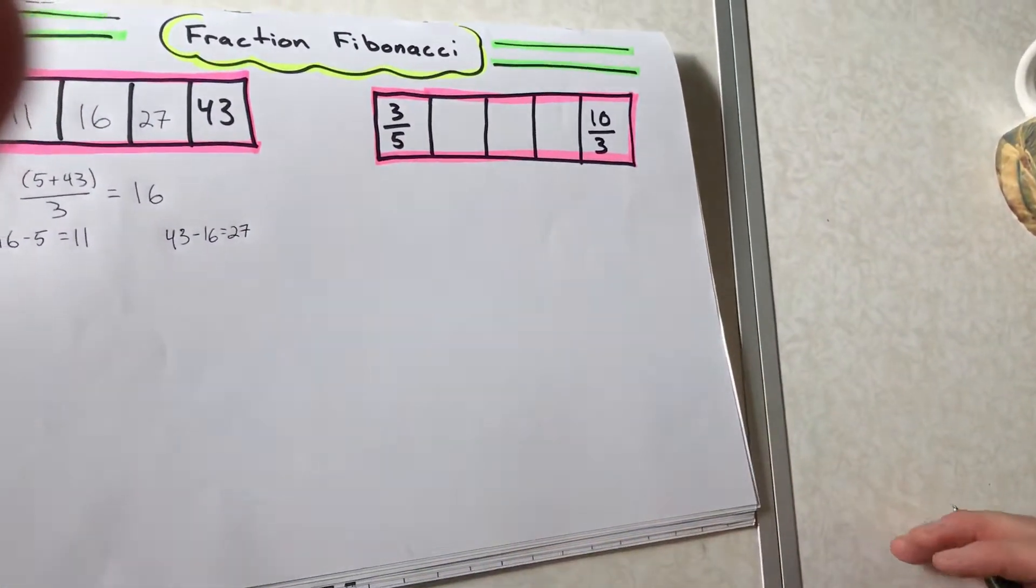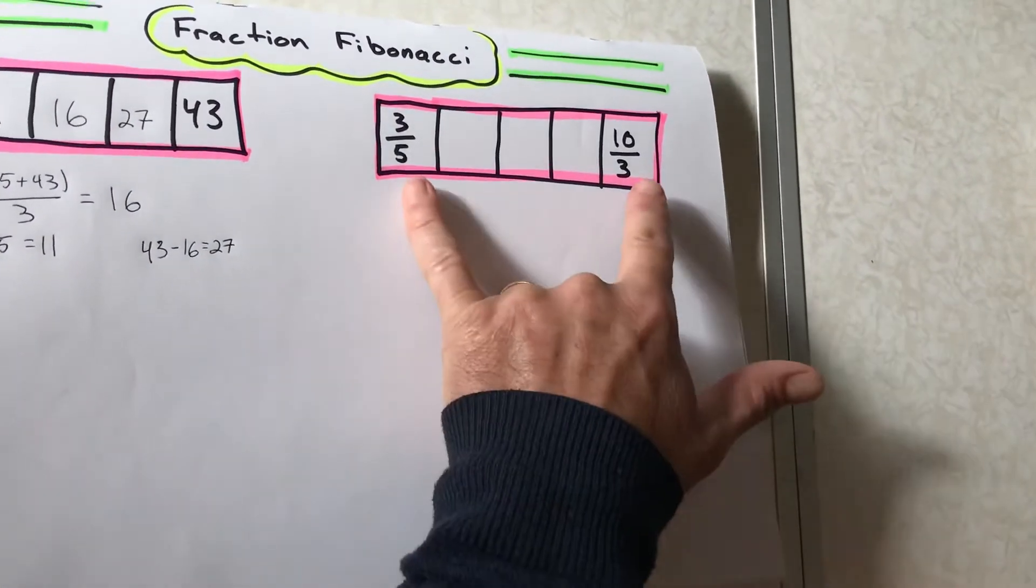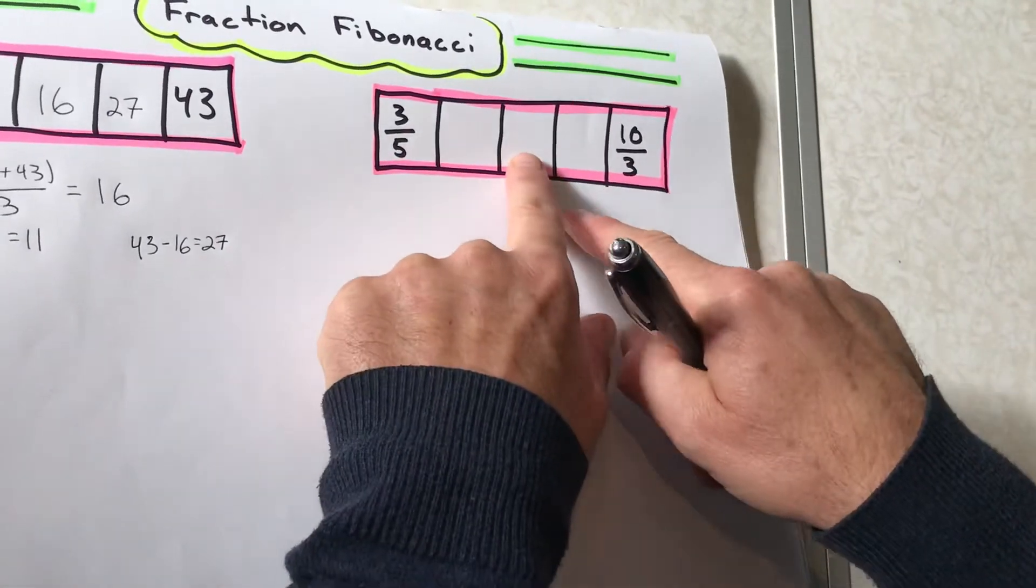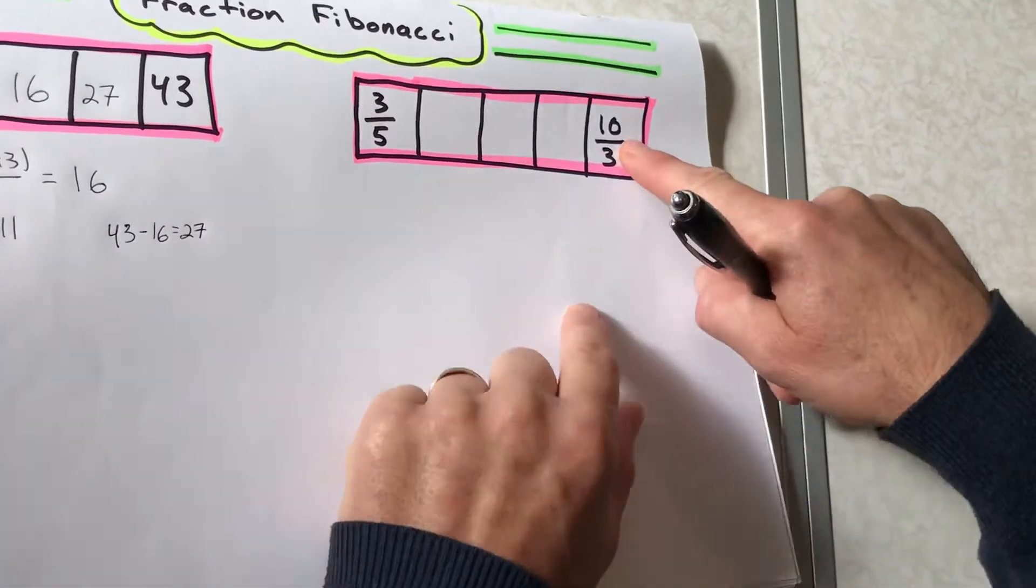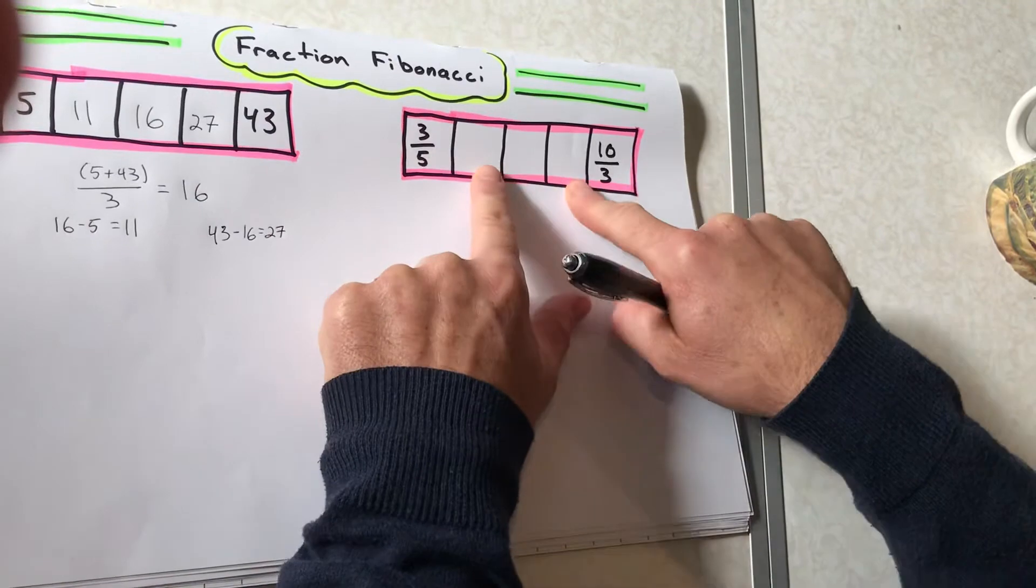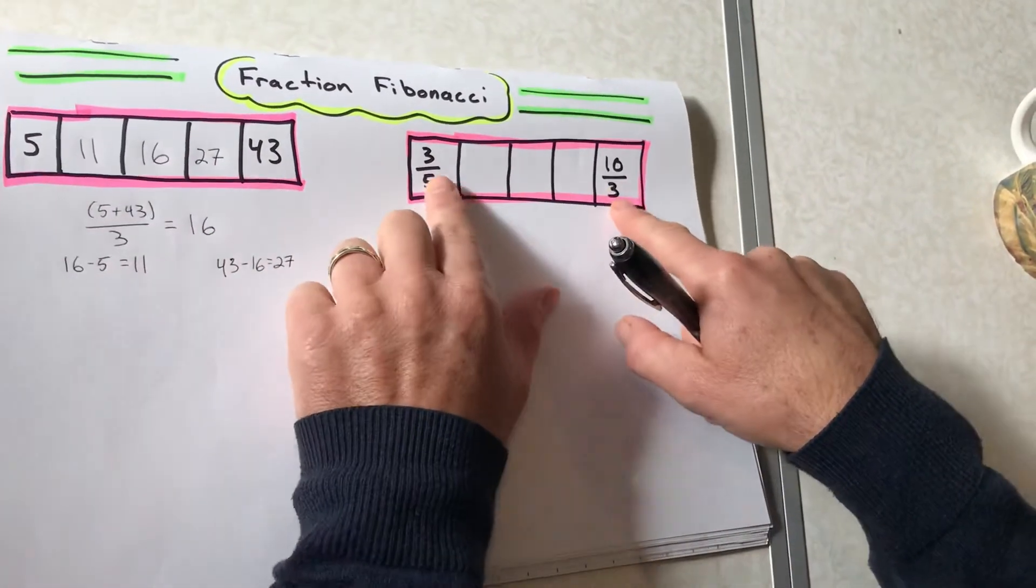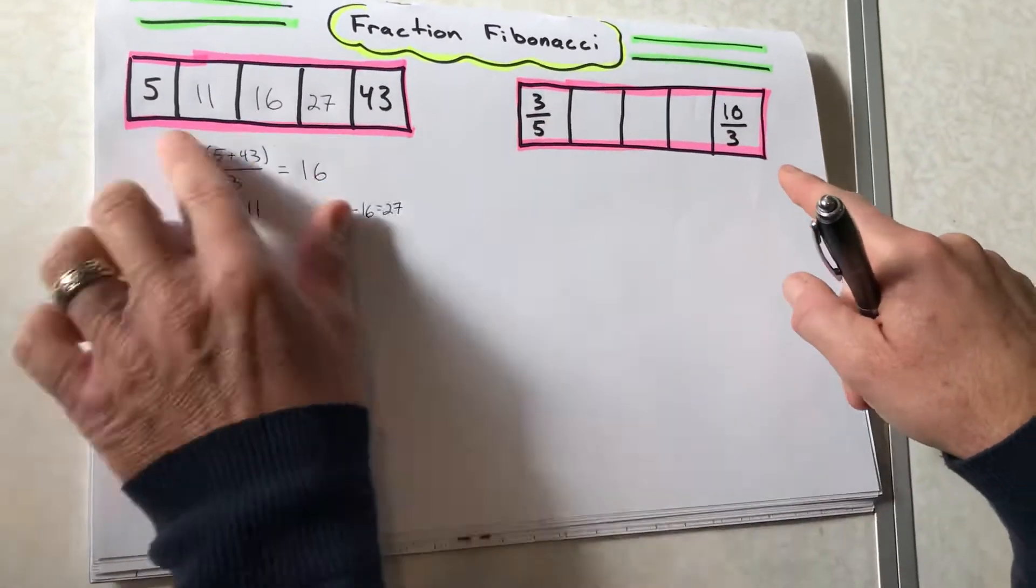Well, of course, it still works for fractions. So Fibonacci sequence will still work for fractions. And so to find that middle guy, it's an improper fraction. And right now, I'm not gonna worry about simplifying fractions, or if they're improper, I'm just gonna keep them that way.